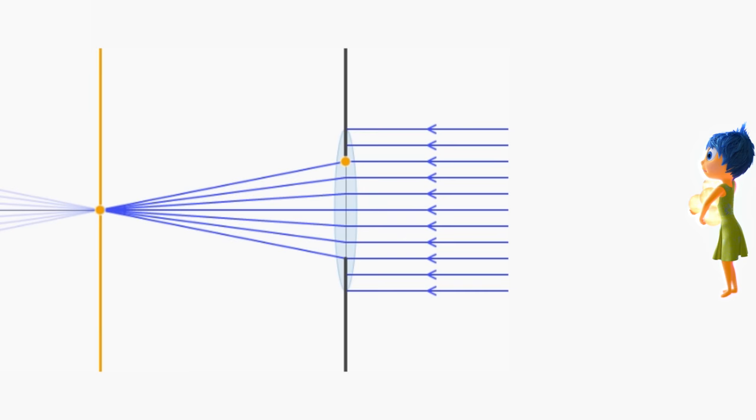Notice the light rays that bounce off Joy and enter the camera are approximately parallel. If we place our image plane at the focal length of the lens, Joy will be in focus.